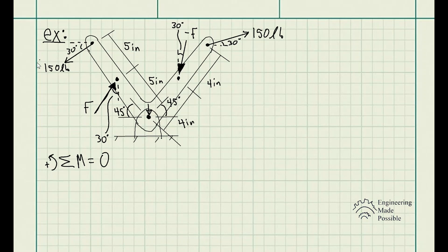Let's analyze the first force: 150 pounds at a 30-degree angle with respect to the horizontal axis. We split it into its X and Y components — the Y component goes downward and the X is the horizontal portion. It's nothing more than trig to solve for the components. If it's simpler to draw each individual force separately with respect to the hinge point, then do that — there's so much information it can get confusing. In this case, I'll work a bit faster.